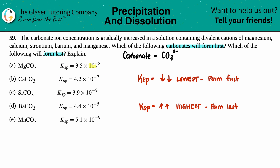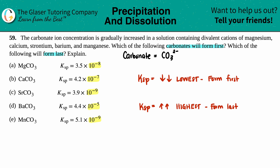Now I'm going to look through my Ksp values. Always look at your exponents first — don't even bother looking at the numbers in front first. We just have to find out which is the lowest and which is the highest.